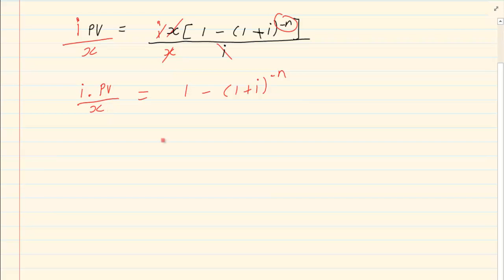Now take your 1 over. So we have i times PV over x minus 1 equals negative (1 plus i) to the power of minus n. Now take the negative over.